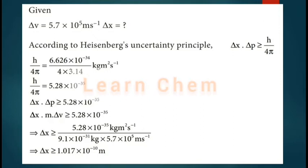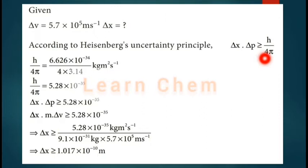We know that according to Heisenberg's principle, Δx × Δp ≥ h/4π, where Δx is the uncertainty in position, Δp is the uncertainty in momentum, h is Planck's constant, and π = 3.14. We use this formula to determine the uncertainty in the position of the electron.